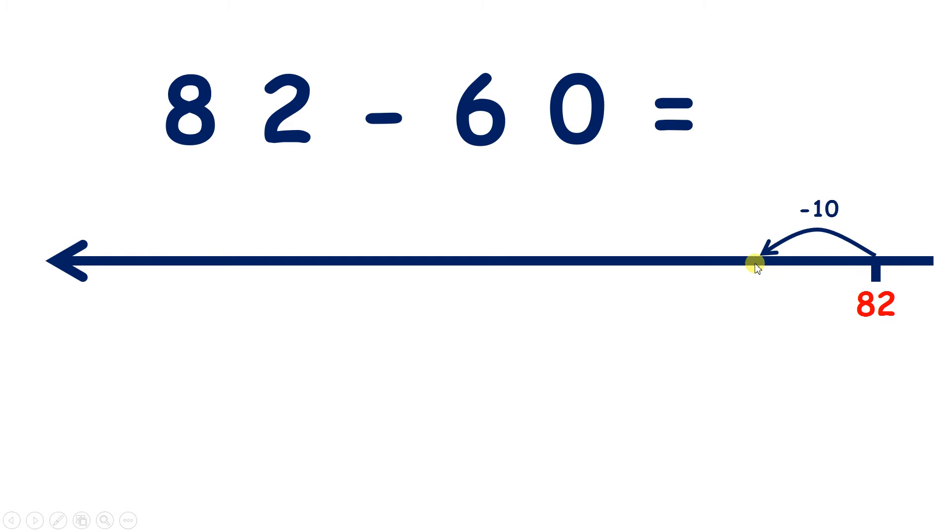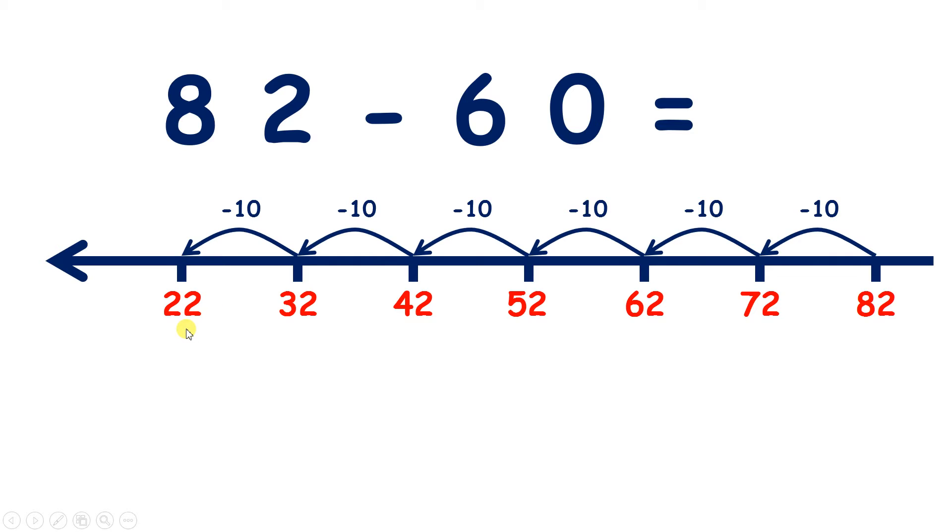So subtract one 10 and we have 72. Subtract 2 tens, 62. 3 tens, 52. That's 4 tens, 42. 5 tens, 32. And now 6 tens leaves us with 22. So we've subtracted 60 because we've subtracted 6 tens. We've subtracted 10 six times. So 82 minus 60 equals 22.